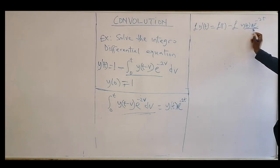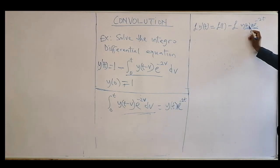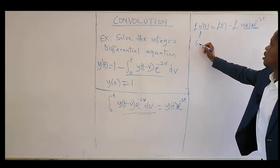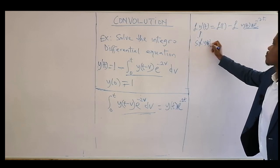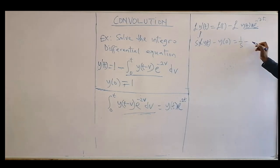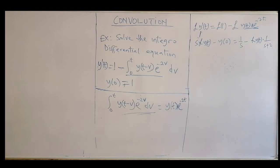So the Laplace transform gives us: Laplace of y'(t) minus y(0) equals 1/s minus Laplace of y(t) times 1/(s + 2). Rearranging, Laplace of y(t) times s plus Laplace of y(t) times 1/(s + 2) equals 1/s plus 1, using y(0) = 1.